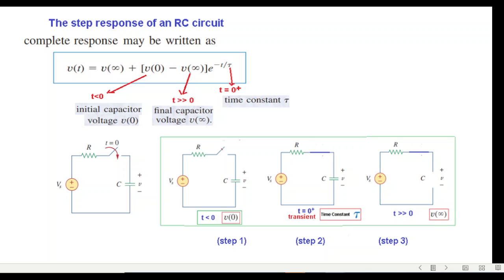Next step is t greater than 0 or t=0+. The switch is closed but the capacitor is not open circuit - it is in the transient condition. From this circuit we'll find the time constant. The third stage will be when the capacitor gets fully charged and behaves like an open circuit. This is called t much greater than zero, and the capacitor voltage we get is called v(∞).